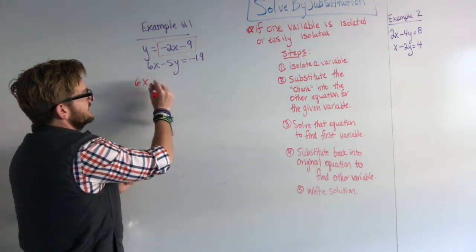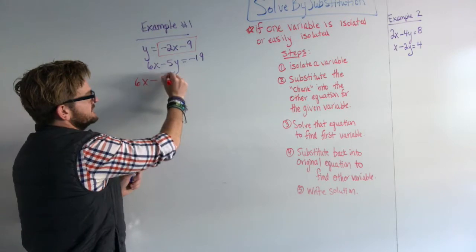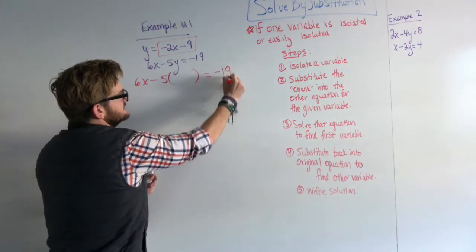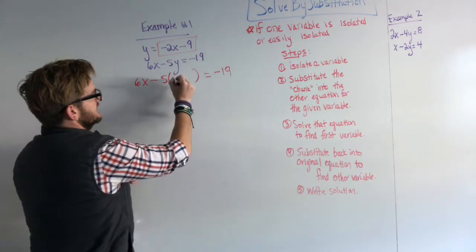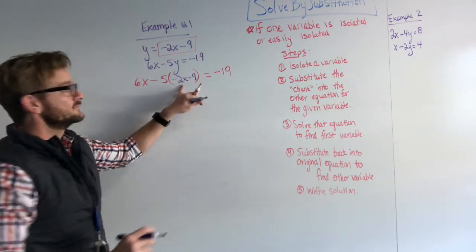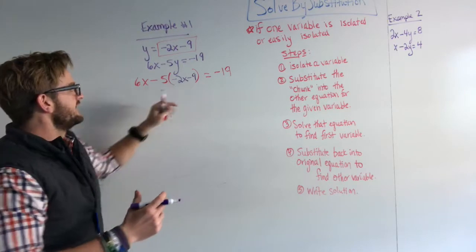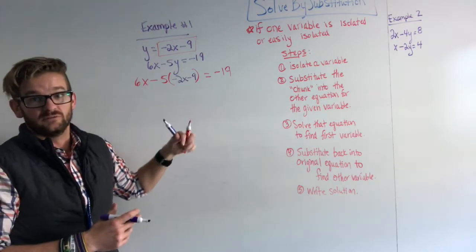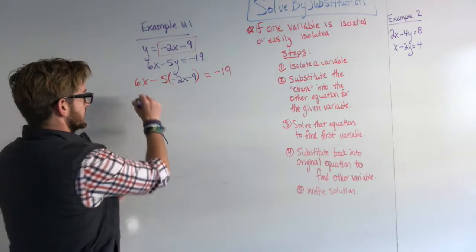So just make sure we substitute it in for y. If I rewrite my equation, it's 6x minus 5 times y. I'm just going to take that negative 2x minus 9 and I'm going to substitute it in. Now I have one equation and one variable and I can solve this equation.